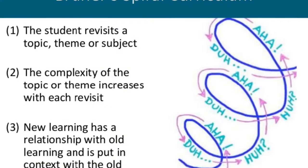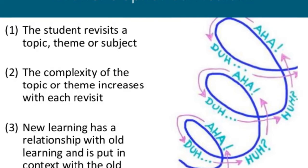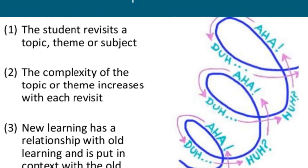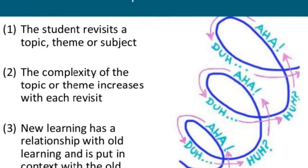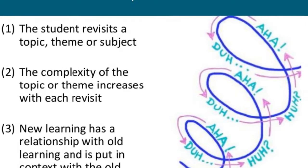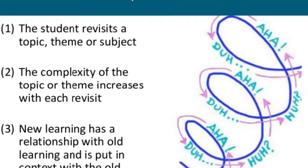Bruner believed a child of any age is capable of understanding complex information through the spiral curriculum. The spiral curriculum is information being structured so that complex ideas can be taught at a simplified level first and then revisited at more complex levels later on. Subjects would be taught at levels of gradually increasing difficulty.